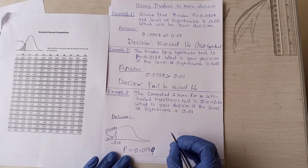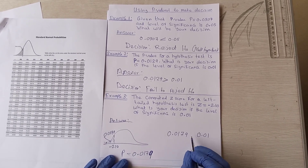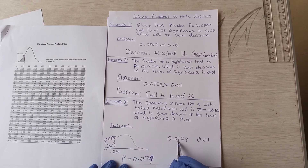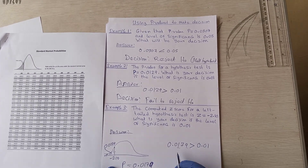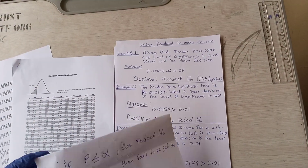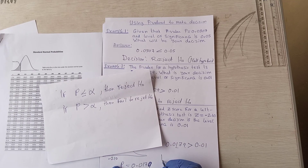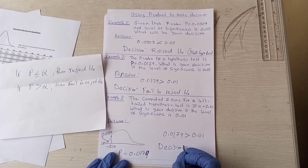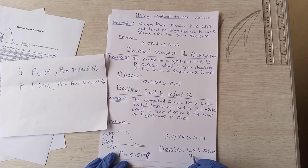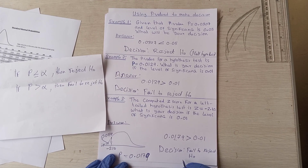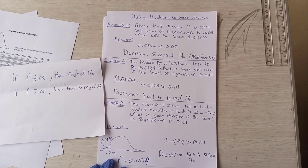Now we compare the p-value 0.0179 to the level of significance 0.01. The p-value 0.0179 is greater than 0.01. The decision rule states that if p is greater than alpha, you fail to reject H₀. Therefore, the decision is to fail to reject H₀ — or we can say do not reject H₀. There is not enough evidence to reject H₀.